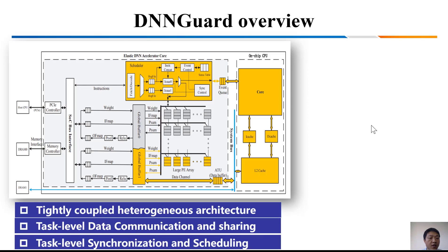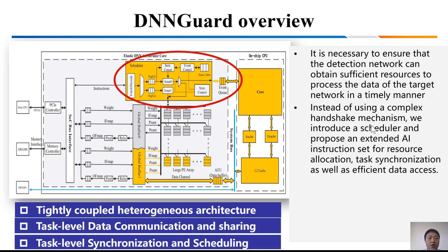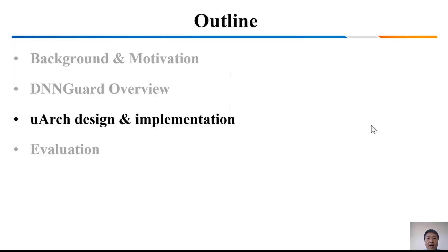The third feature is task-level synchronization and scheduling. It's necessary to ensure that the detect network can obtain sufficient results to process target network data in a timely manner. Instead of using a complex handshake mechanism, we introduce a scheduler and propose an extended AI instruction set for resource allocation, task synchronization, and efficient data communications.